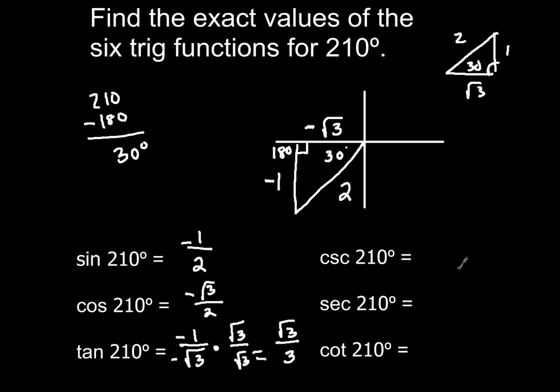Now what I like to do for the cosecant, secant, and cotangent functions, I just look back at sine, cosine, and tan and take their reciprocals. So cosecant is the reciprocal of the sine function. So the reciprocal of negative 1 half is negative 2 over 1, which just simplifies down to negative 2.